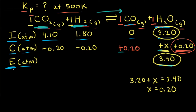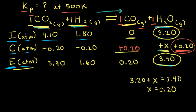Therefore, the equilibrium partial pressure of carbon dioxide is 4.10 minus 0.20, which is 3.90. For H2, it's 1.80 minus 0.20, which is 1.60. And for carbon monoxide, we started at 0 and gained 0.20, so the equilibrium partial pressure is 0.20. As the net reaction moved to the right, we lost reactants and gained products until equilibrium was reached.